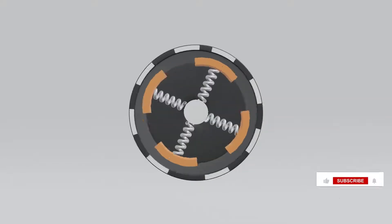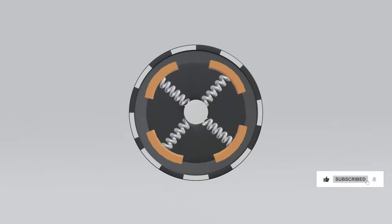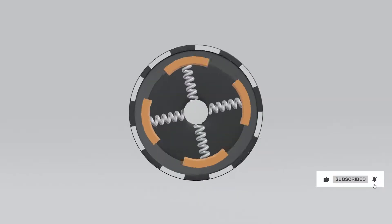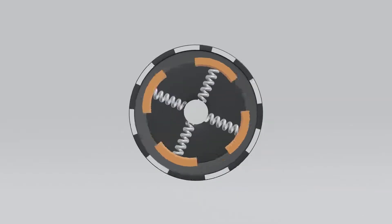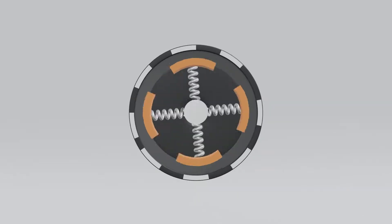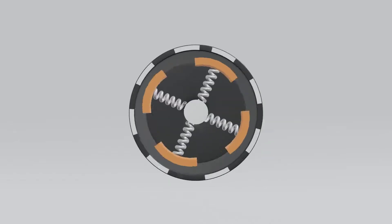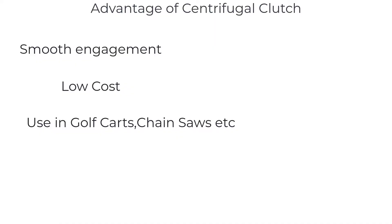The pad moves outward and connects to the driven shaft. Due to this connection, it attaches to the driven shaft and transmits its power. This is how a centrifugal clutch mechanism works.